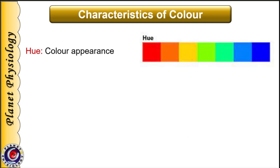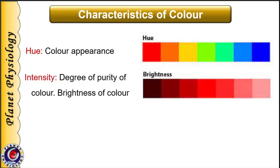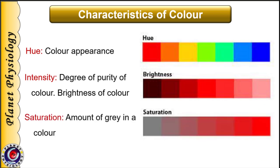Before going into details of color vision, let us understand some basics. Color has three characteristics. First is hue — the appearance or actual color, which gives the name to the color. Next is intensity, which is the degree of purity or brightness of the color. It tells how much white or black is mixed in a particular color — when black is mixed the color becomes darker, and when white is mixed it becomes lighter. The third characteristic is saturation, which is the amount of gray in a particular color, as seen from these shades.